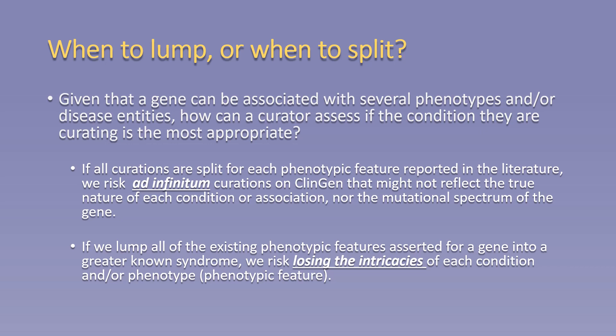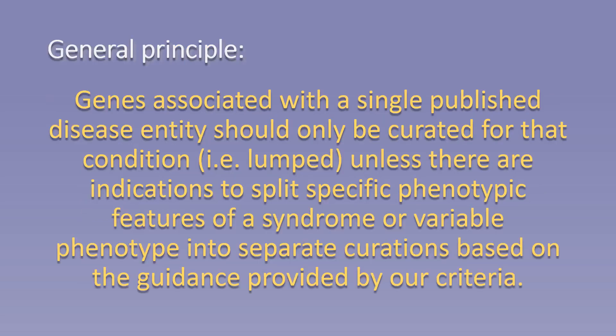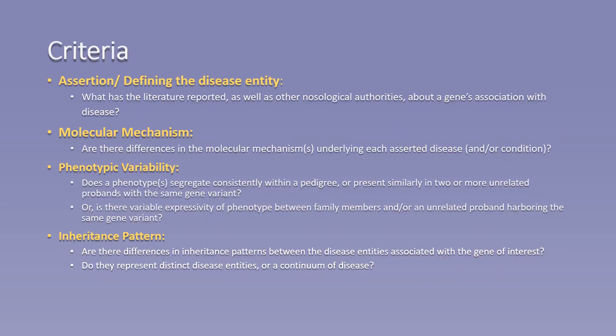Conversely, if we lump all of the existing phenotypic features asserted for a gene into a greater known syndrome, we risk losing the intricacies of each condition or phenotypic feature. The general principle for lumping and splitting is that genes associated with a single published disease entity should only be curated for that condition unless there are indications to split specific phenotypic features into separate curations based on the guidance provided in our criteria. These are the four criteria to consider when assessing the disease entities associated with the gene of interest and determining the most appropriate entity for the curation.